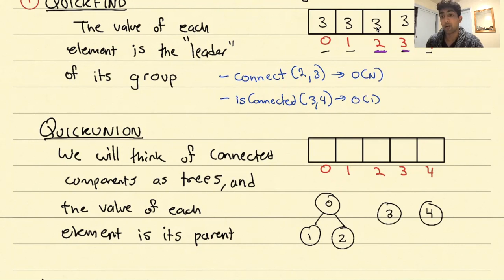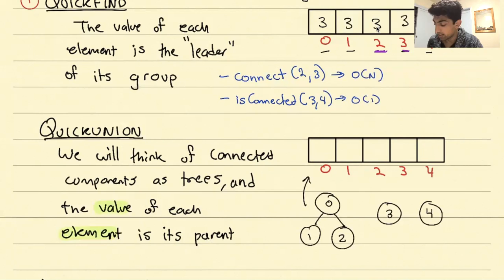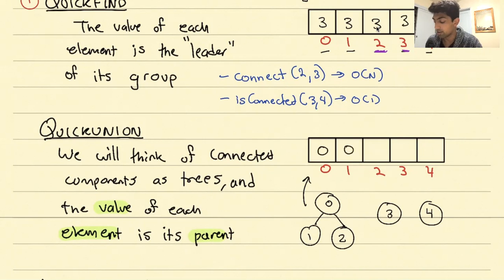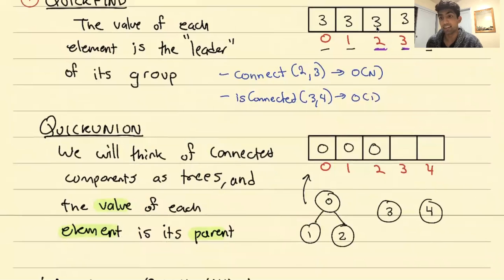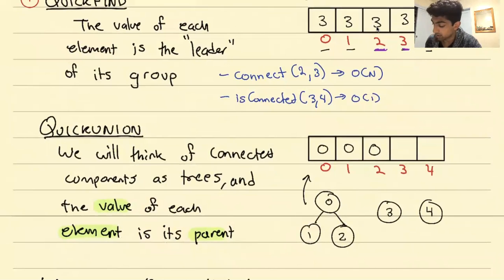Why is a tree representation helpful? When we translate these groups to the array, we say the value of each element is its parent in the corresponding tree. If an element is the root, its value is just the number itself. So the value of 0 is 0 (it's the root), the value of 1 is 0, and the value of 2 is 0. Then 3 and 4 each point to themselves. This representation encodes more structural information than Quick Find.